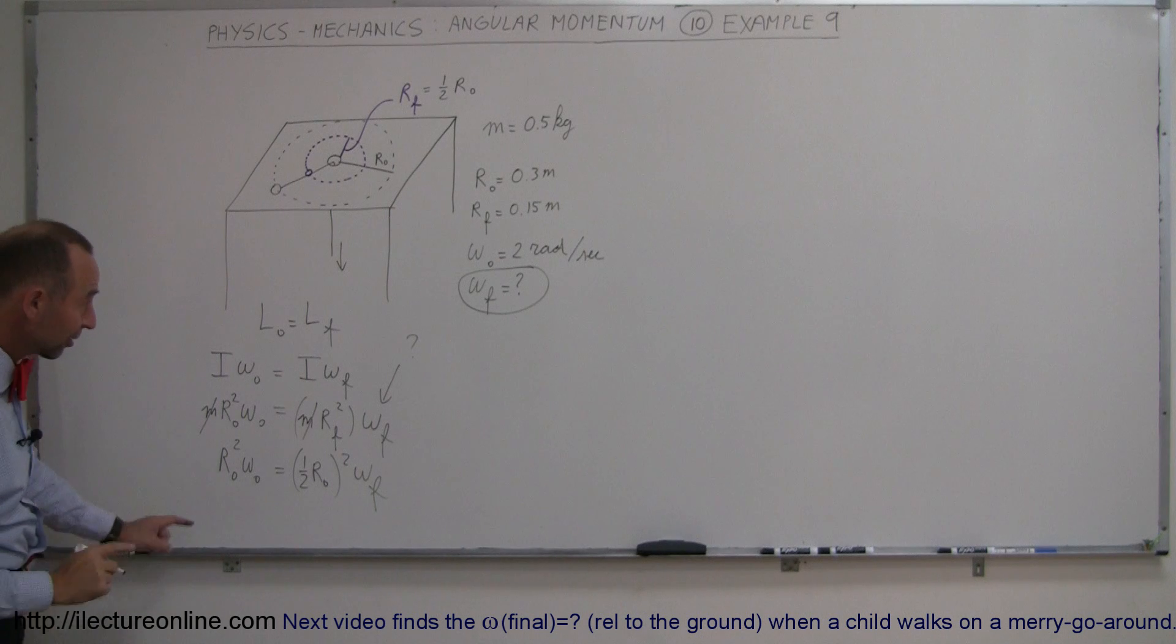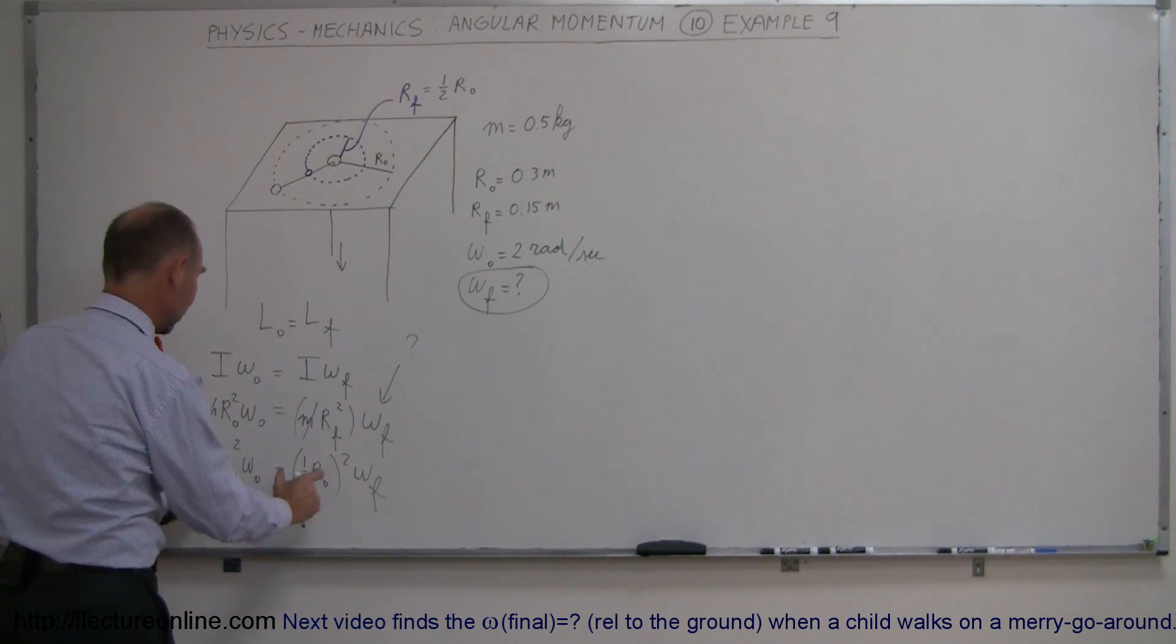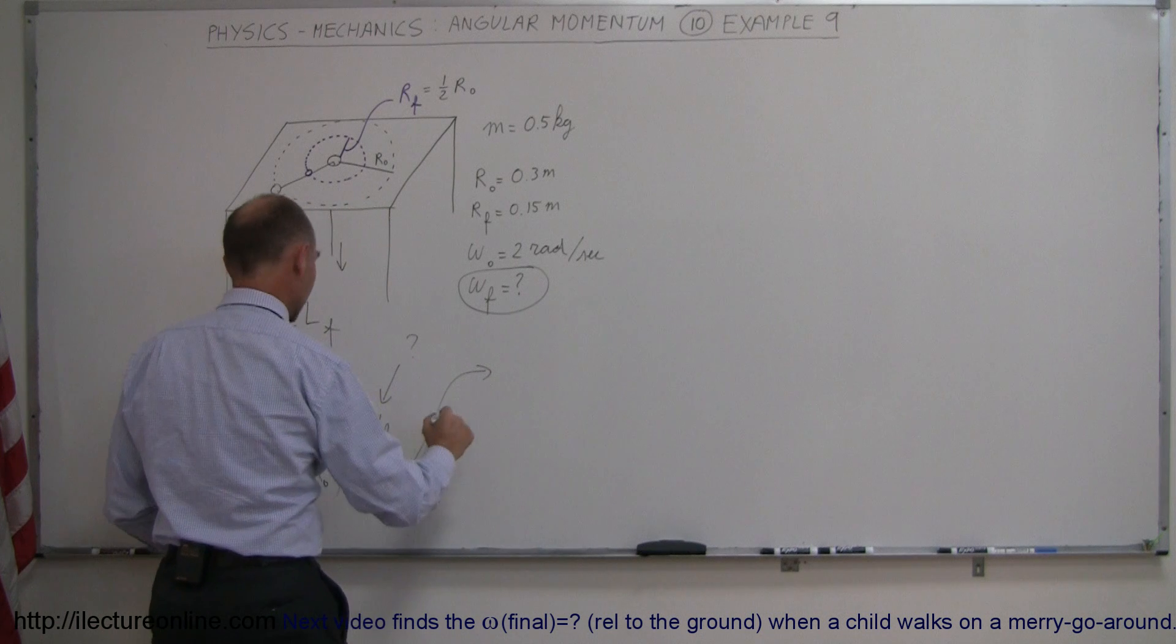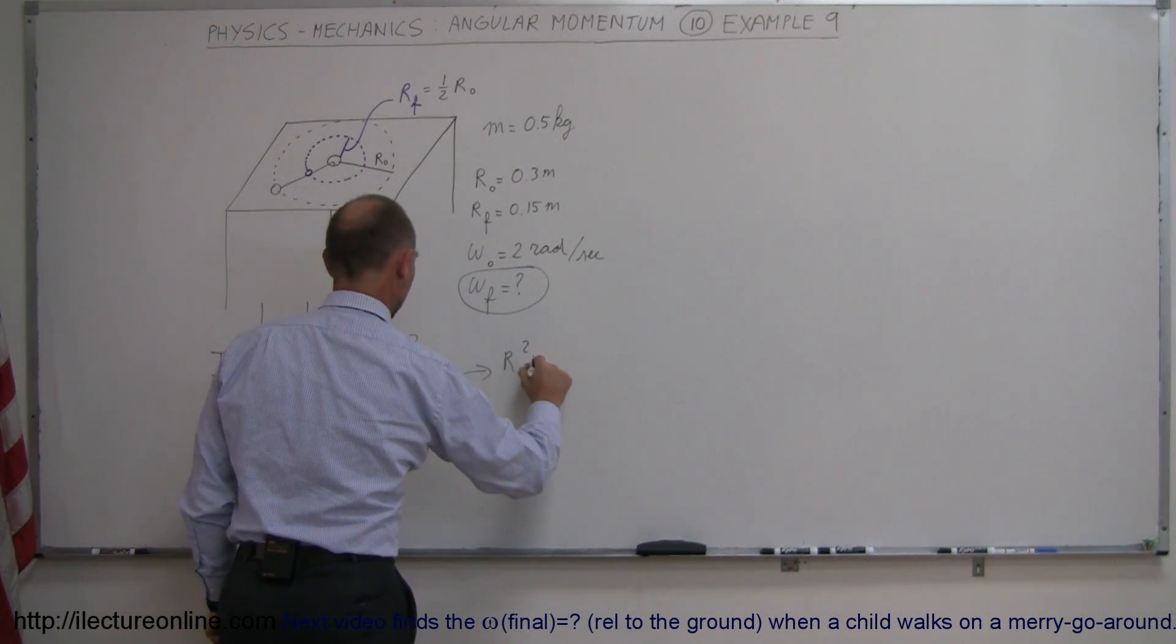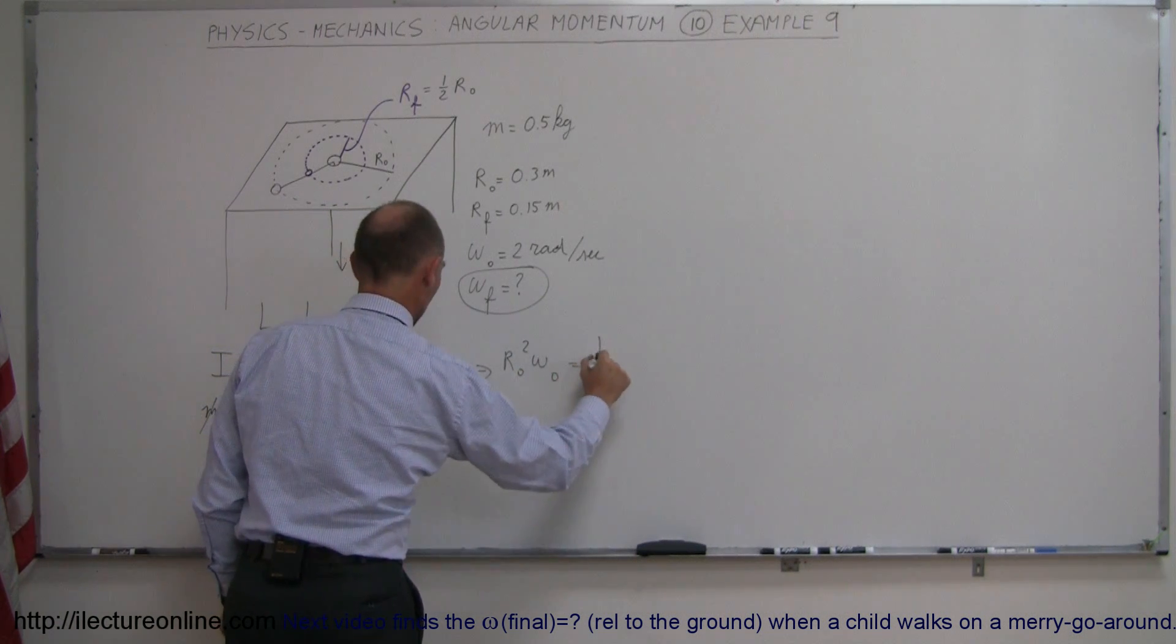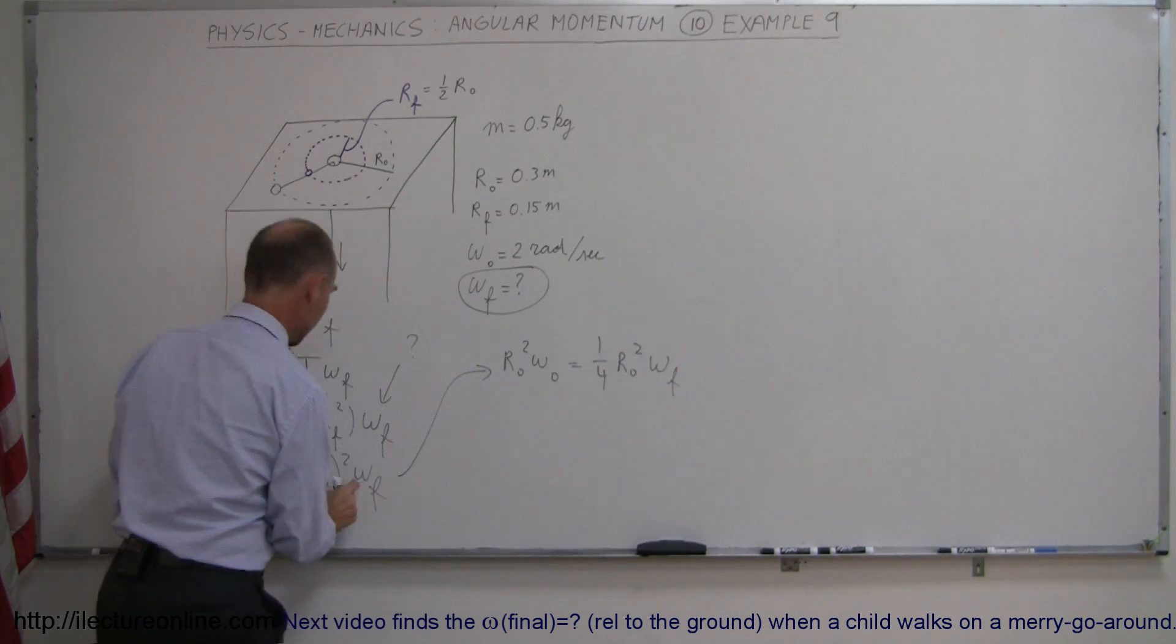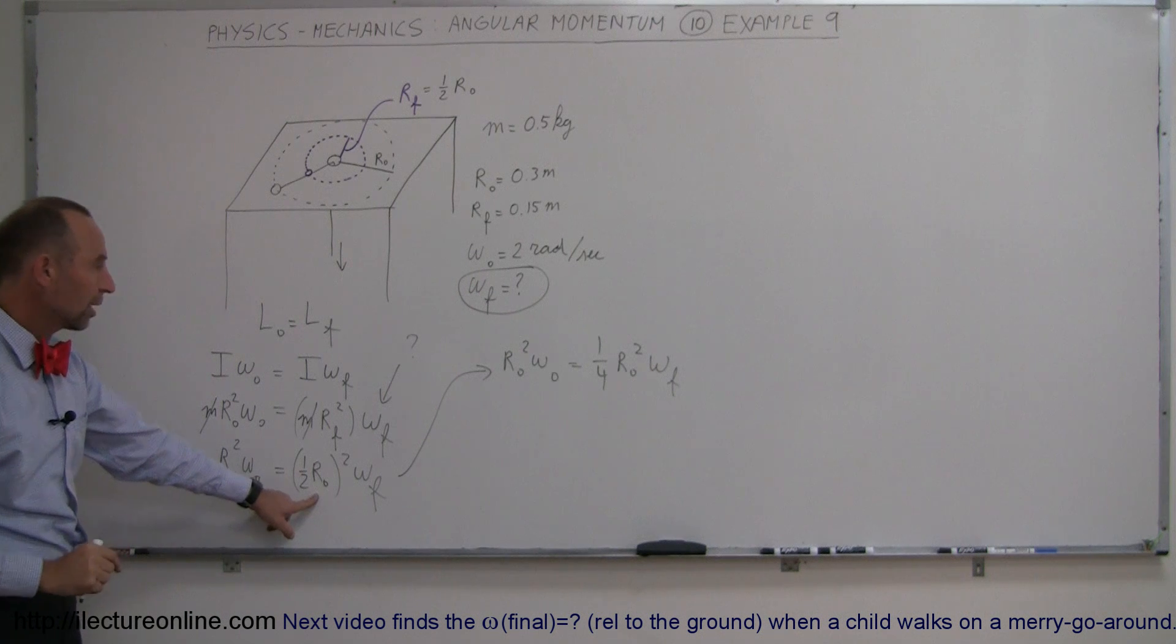I'm running out of board space down here so let me come up here. I'm now going to work this out so we have r initial squared omega initial is equal to one quarter r initial squared times omega final so I'm simply squaring this term right here.